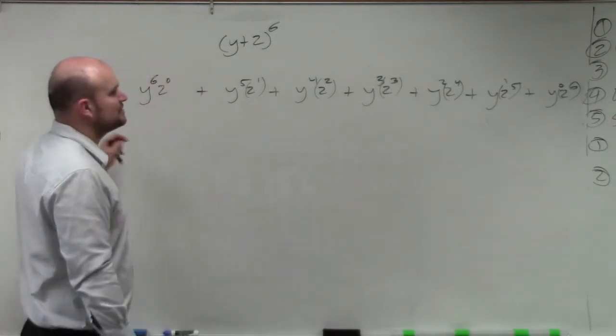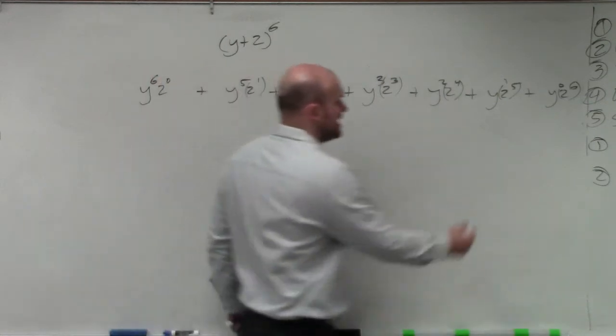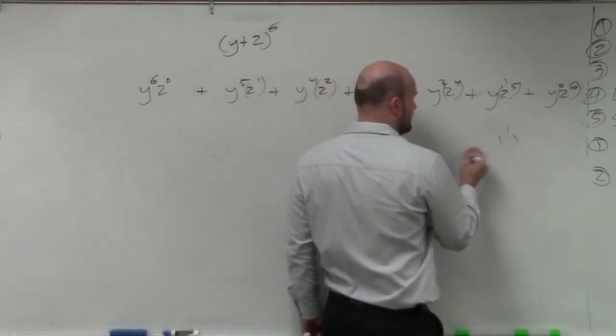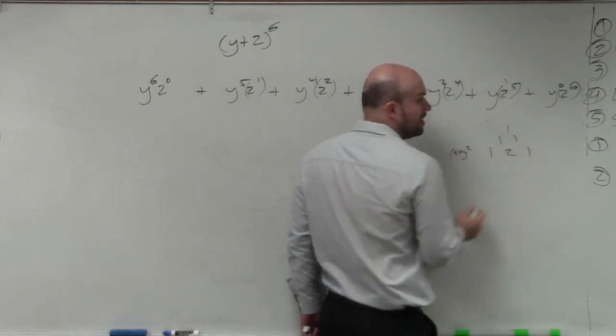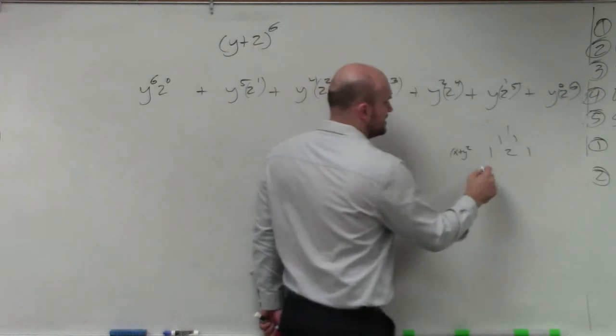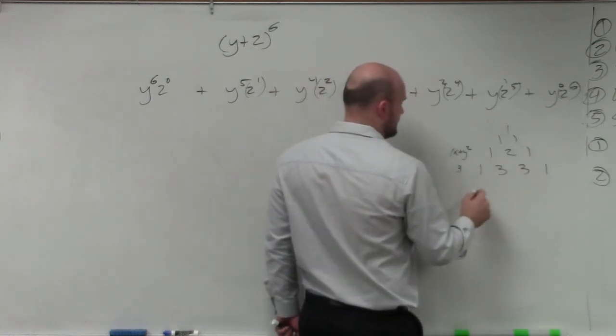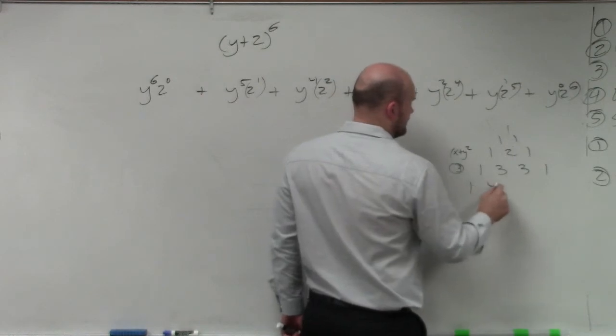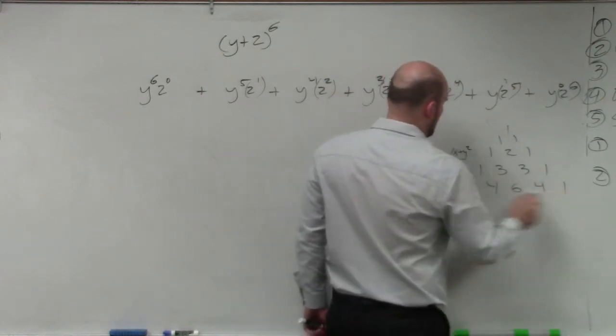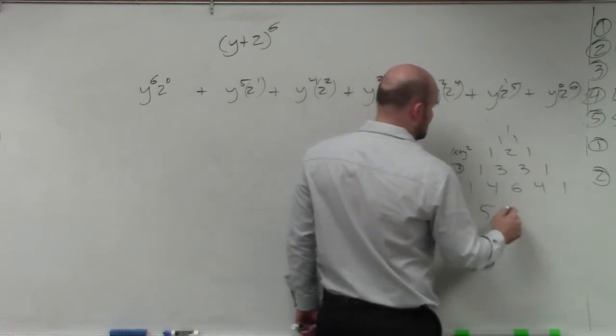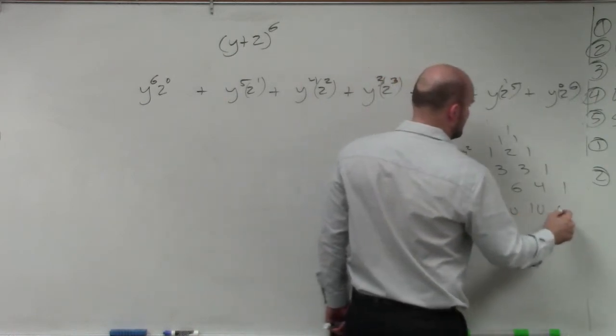The last term that we talked about was the Pascal's triangle, where if we have our expansion, so if we have x squared, or our x plus y squared, that's going to give us 1, 2, 1 as the coefficients. So then I can just follow down. So that'd be to the 3rd. We could do 1, 4, 6, 4, 1. That's going to be to the 4th. To the 5th would be 1, 5, 10, 10, 5, 1.